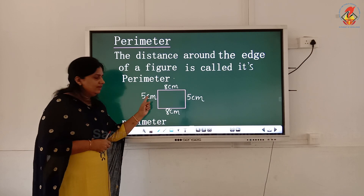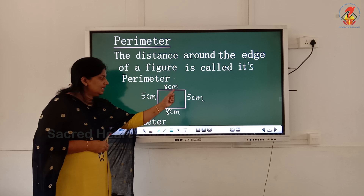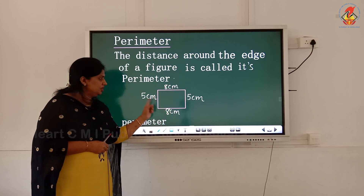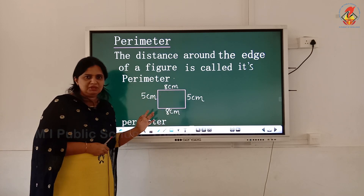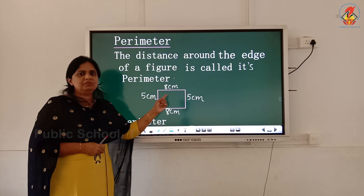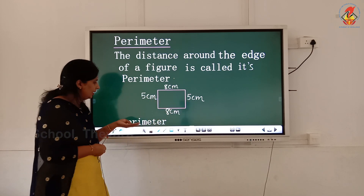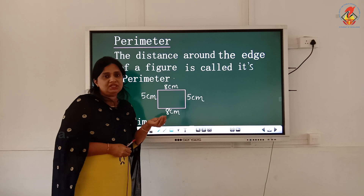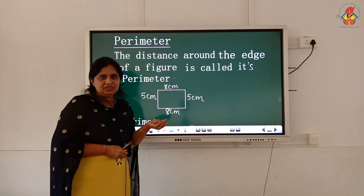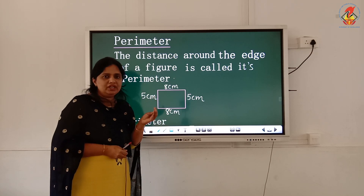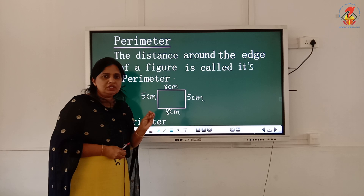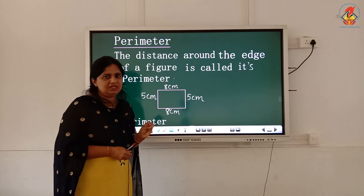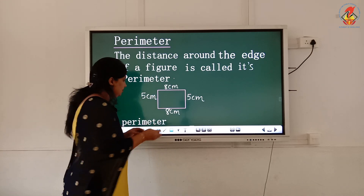I will give you one example. See the rectangle. Both sides are 8 centimeters and this one is 5 centimeters, and 5 centimeters also. How can you find the perimeter of this figure? The total distance around the edge of a shape is called perimeter.